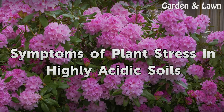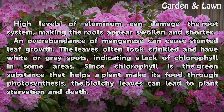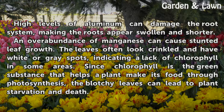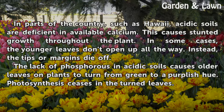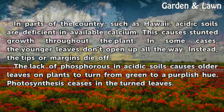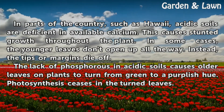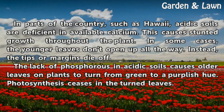Symptoms of plant stress in highly acidic soils. High levels of aluminum can damage the root system, making the roots appear swollen and shorter. An overabundance of manganese can cause stunted leaf growth. The leaves often look crinkled and have white or gray spots, indicating a lack of chlorophyll in some areas. Since chlorophyll is the green substance that helps a plant make its food through photosynthesis, the blotchy leaves can lead to plant starvation and death. In parts of the country, such as Hawaii, acidic soils are deficient in available calcium. This causes stunted growth throughout the plant; in some cases, the younger leaves don't open up all the way — instead, the tips or margins die off.